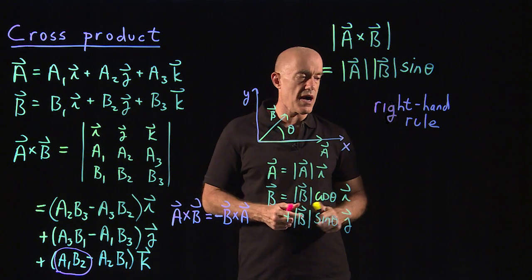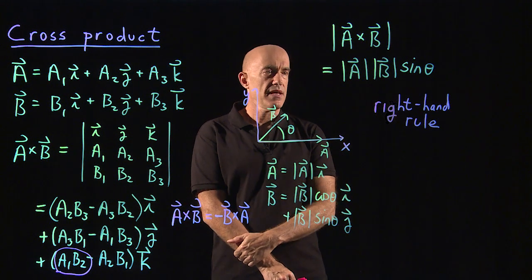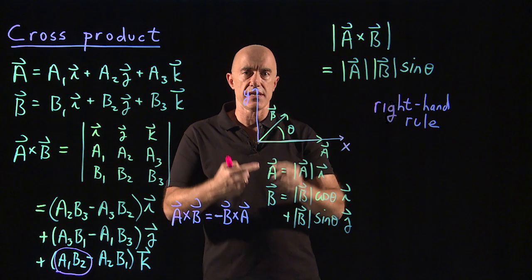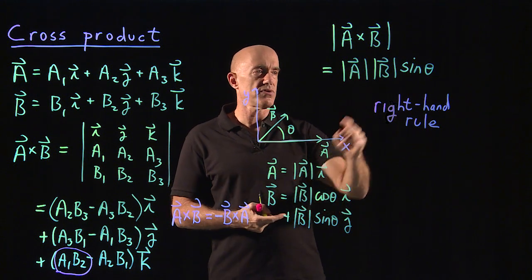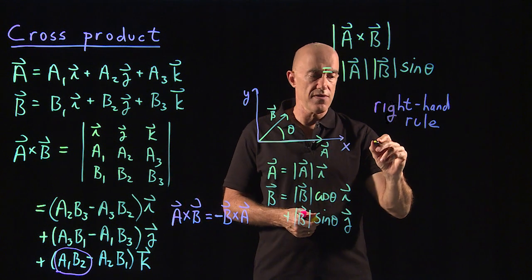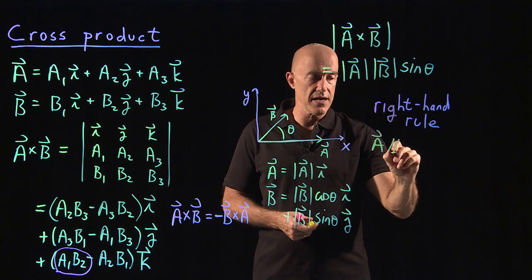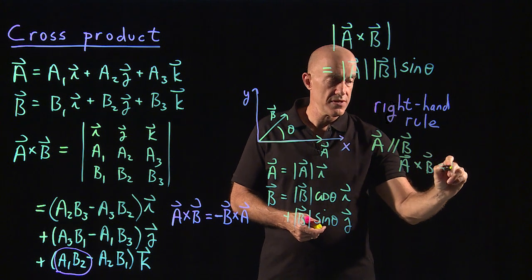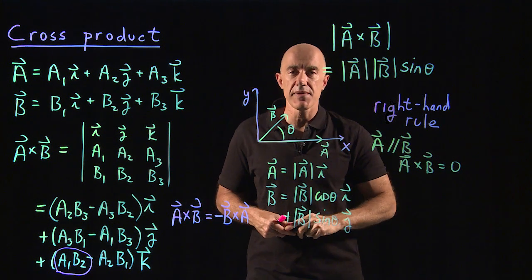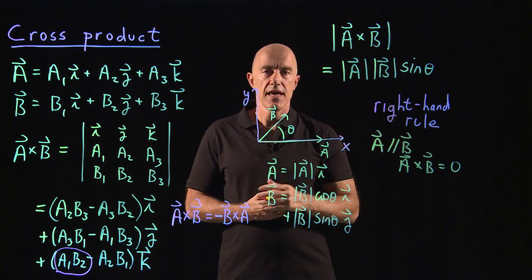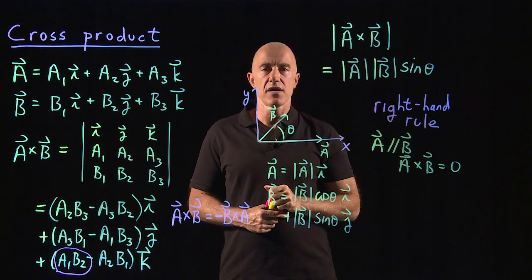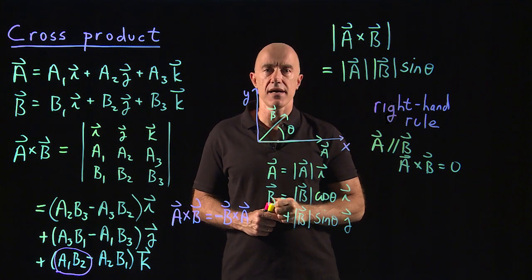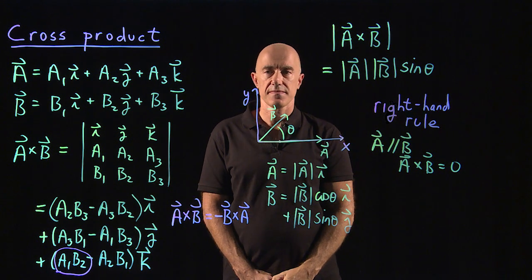One more comment: what happens if a and b are parallel? If a and b are parallel, then theta equals zero and sine theta equals zero, so a cross b equals zero. That's a big difference from the dot product: if a and b are perpendicular, then a dot b equals zero, but if a and b are parallel, then a cross b equals zero.